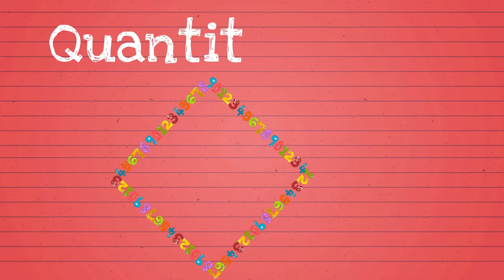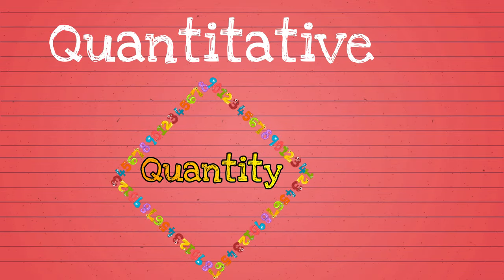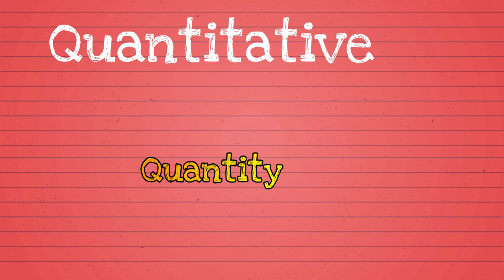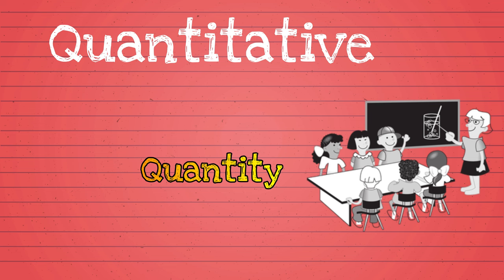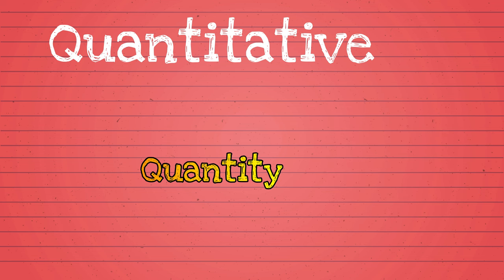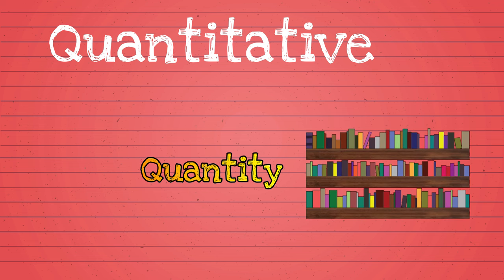Quantitative sounds like the word quantity. So what is a quantity? A quantity is a number. So a quantitative observation will always have a number in it. For example, there are six students sitting at my table. This observation has a number. Therefore, it is a quantitative observation. Another example of a quantitative observation is there are 105 books on the bookshelf. There is a number in this. So again, it is a quantitative observation.